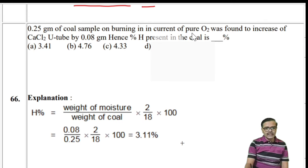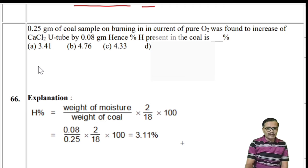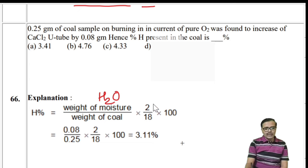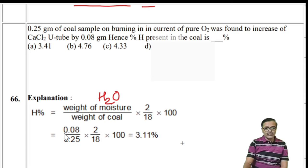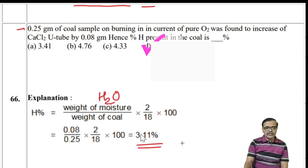Numerical: 0.25 g coal on burning in oxygen increases weight of calcium chloride U-tube by 0.08 g (H2O absorbed). Hydrogen% = (weight of H2O / weight of coal) × (2/18) × 100 = (0.08/0.25) × (2/18) × 100 = 3.56% ≈ 3.11%. The answer is 3.11%.